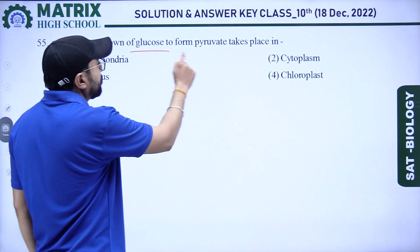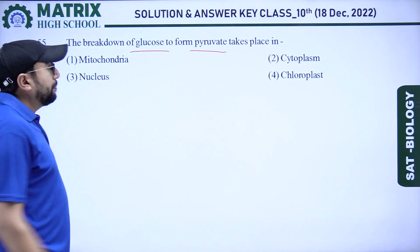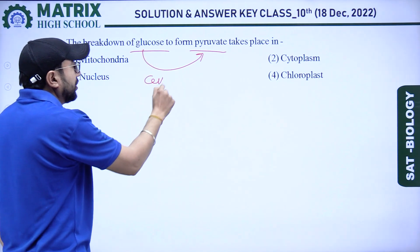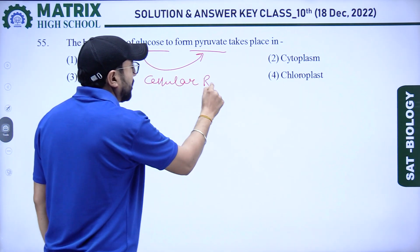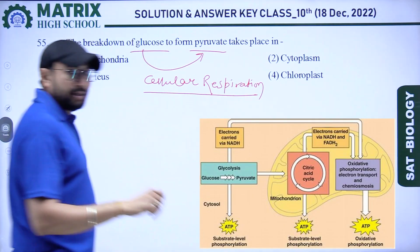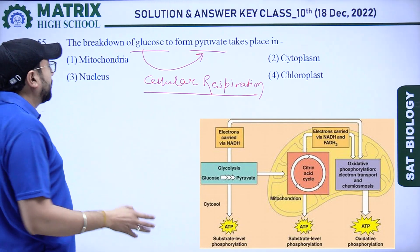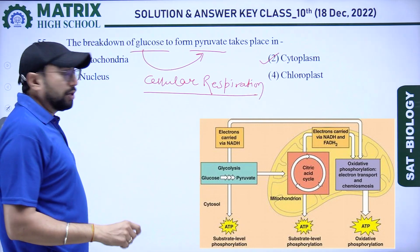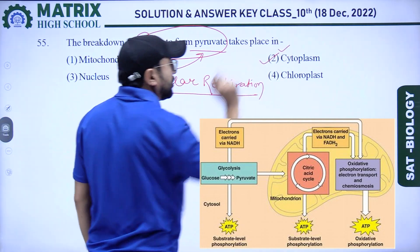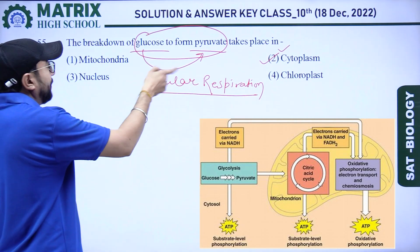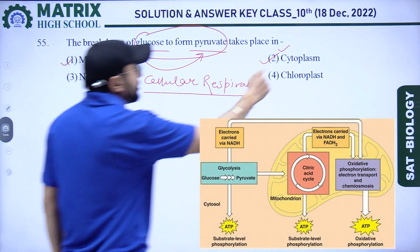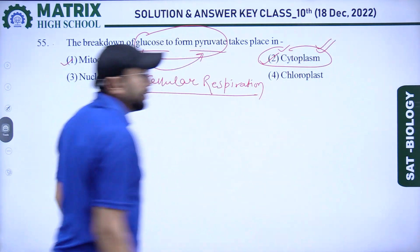Next question: the breakdown of glucose to form pyruvate takes place in? This process is cellular respiration, occurring in the cytoplasm and mitochondria. Our right answer is cytoplasm, because glycolysis occurs at the cytoplasm, and the next step — the Krebs cycle — occurs in the mitochondria. So our right answer is cytoplasm.